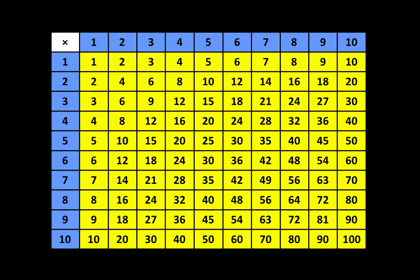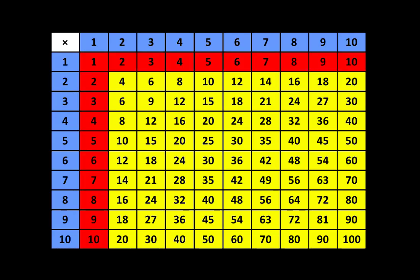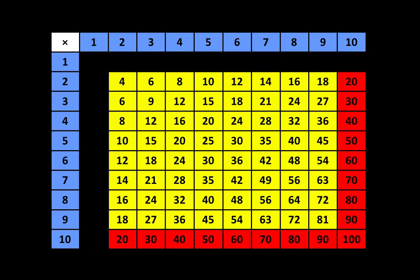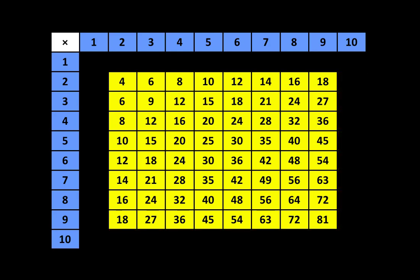I'll quickly review some ideas that we've learned. We discussed the identity property of multiplication — I'll remove those. We discussed relating multiplication to place value. And now we're going to take a closer look at the commutative property of multiplication.